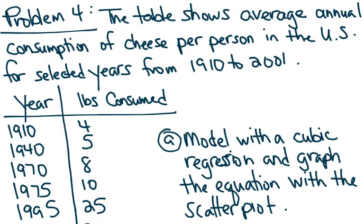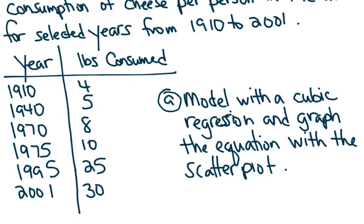So in problem four, the table shows the average annual consumption of cheese per person in the U.S. for selected years from 1910 to 2001. So the years are 1910, 1940, 1970, 1975, 1995, and 2001. And the second column is the number of pounds consumed per person, approximately.